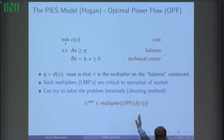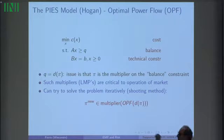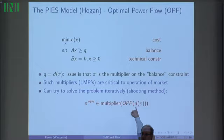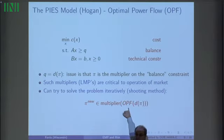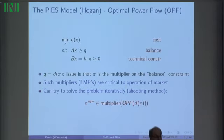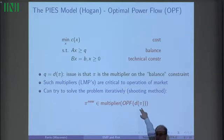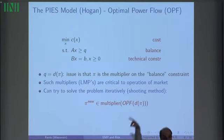So Hogan says, let's apply a shooting method. Hogan said, let's choose pi, evaluate D of pi, solve the optimization problem. All of the optimization codes will give you multipliers as part of their output. We'll use that as pi new, and then we'll plug it back and repeat that process. This is a shooting method, an iterative method. If it works, everybody's happy. Hogan gets the next Nobel Prize, but if it doesn't work, we're out of business.